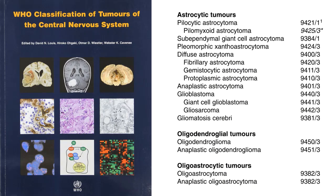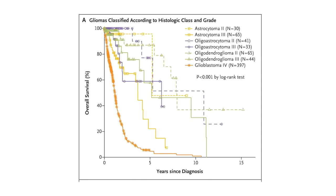However, the problem with the grading system is it is not good at stratifying risk. We assumed that the more aggressive the tumor cells look under the microscope, the poorer the prognosis, which is not true clinically. If we look at these Kaplan-Meier survival curves, with morphological grading we are able to stratify risk consistently only in glioblastomas; other tumor entities and grades overlap too much and don't give us a clear idea about outcome.